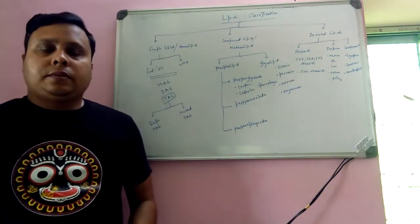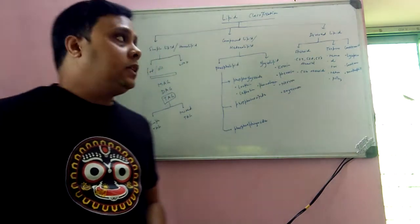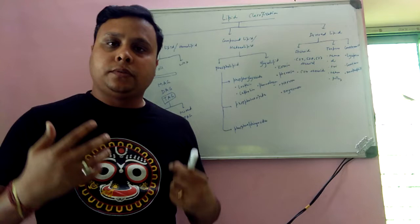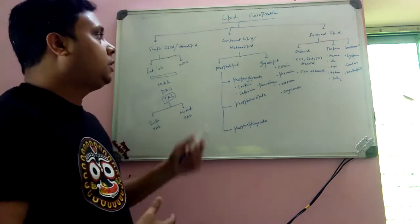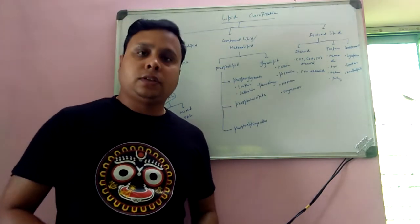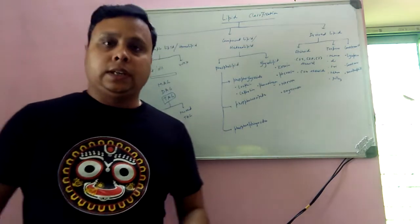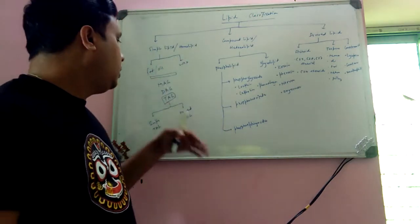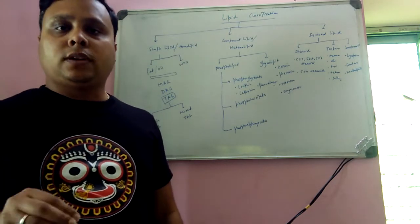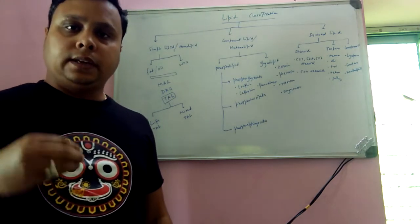In the previous class, we described the different types of lipid molecules — the classification of lipid molecules. They are basically composed of three different types: simple lipid, compound lipid, and derived lipid. In this particular video, we are going to detail what simple lipid is and what types of simple lipid we form, focusing on how simple lipid gets characterized.